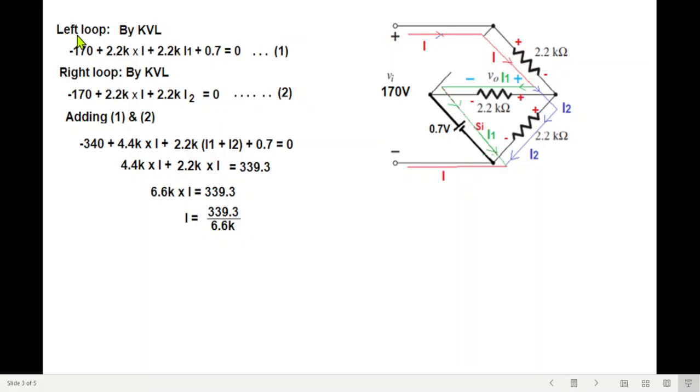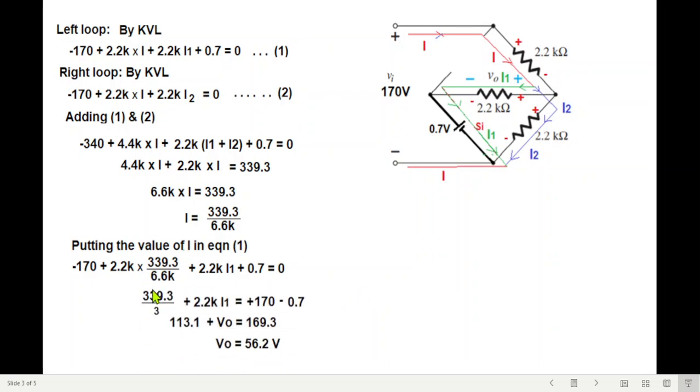Now we'll put this value of I in equation number 1. So putting in equation number 1, you can see this one, I will be replacing with this. And remaining, remains same. Simplifying. And then further simplifying. You can see 2.2K I1. 2.2K I1 is actually V0. So we replace this with V0. And from here, we get V0 to be 56.2V.